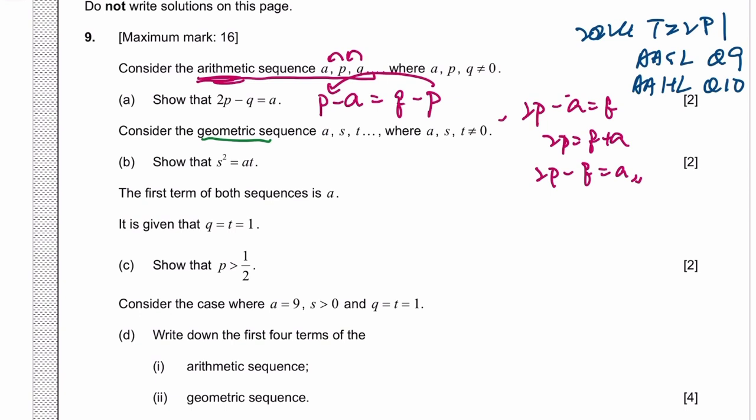And similarly, you can do the same thing for geometric. If it's geometric, there is a common ratio. Common ratio is second term over the first term, which is also the third term over the second term. Then you cross multiply. So S squared is A times T.